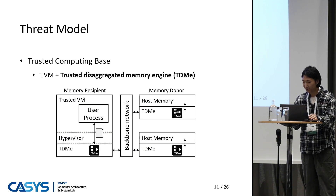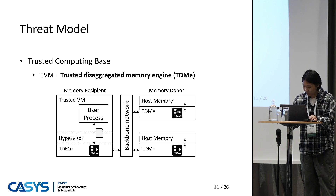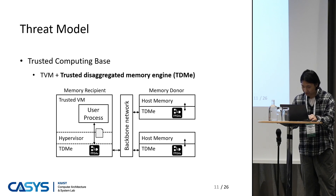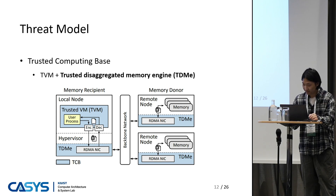So far, we've discussed the challenges in the disaggregated memory system. Now, we will talk about our solutions. Before we get into the details, I'll discuss our threat model first. This diagram represents a brief overview of our system. You can see the recipient on the left and the donor on the right. The recipient node is running a trusted VM on a hypervisor. The user process swaps pages to the memory donor through our TDM engine, TDME in this diagram, which is an implementation on an FPGA. This diagram represents a more detailed version of our system. The area colored in blue — our TCB, which stands for Trusted Computing Base — contains the trusted VM and our system, the TDM engine.